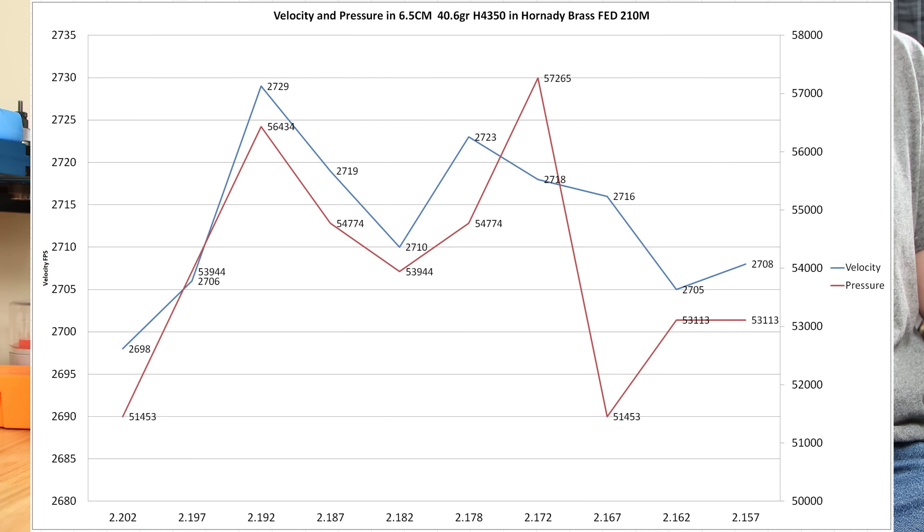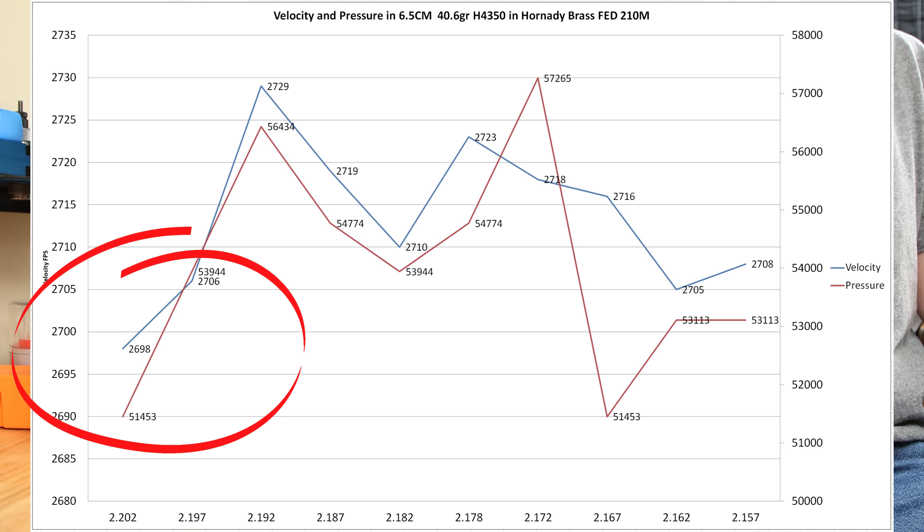Two mistakes here I made right out of the gate, though I still think the data is interesting, was I fired them from longest to shortest, and I didn't run any foulers to start with.